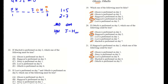Next question — if Macbeth is performed on day two, which of the following must be true? M on day two forces M on day seven as well. We need M after an H, so H-M occurs either around day one or day six. We also know H can't be on day one because J needs to come before it. So H on day six is locked in.